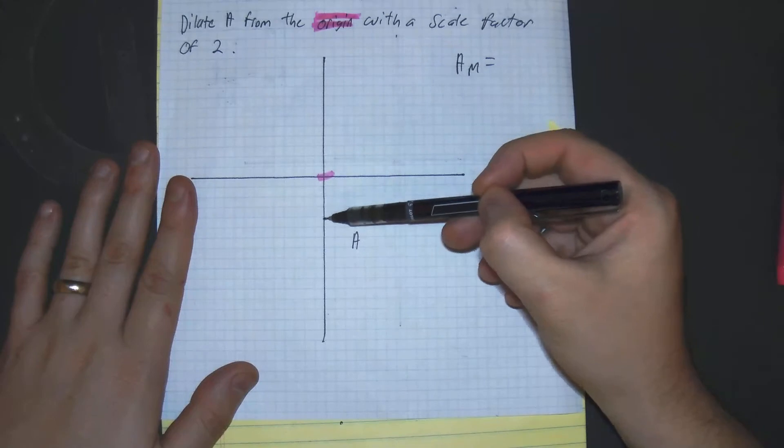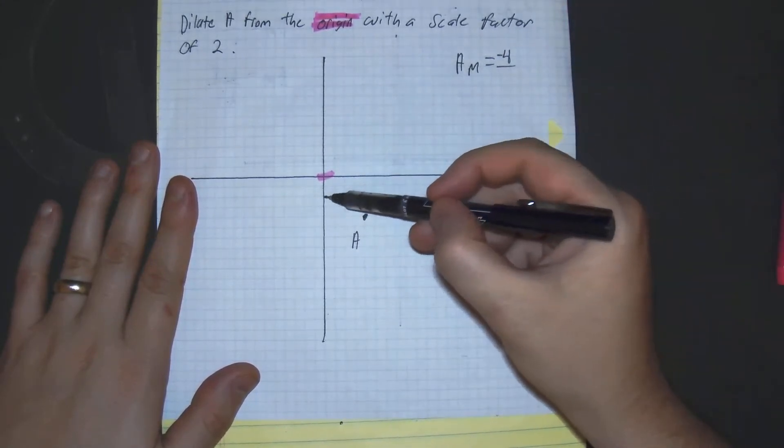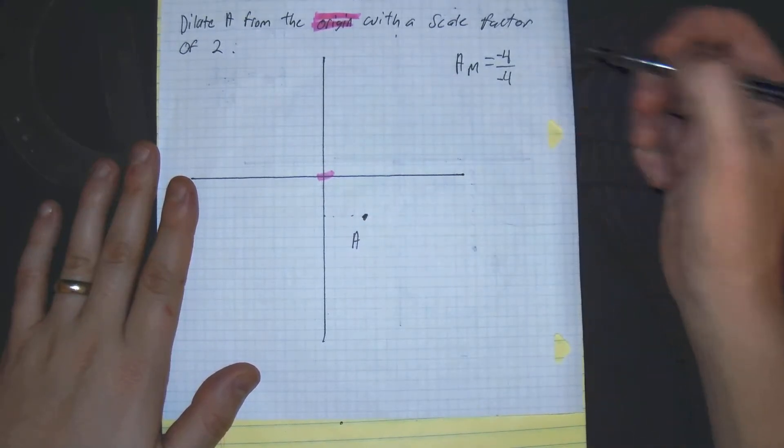1, 2, 3, 4, so that's negative 4. Then horizontal distance: 1, 2, 3, 4. We got negative 4, negative 4.